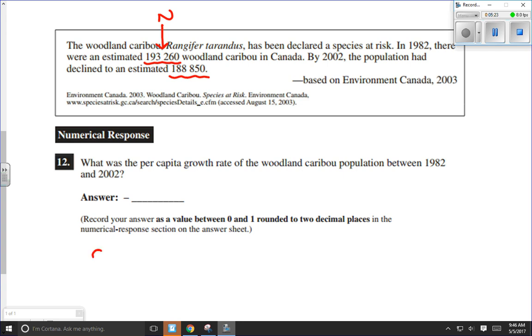Let's write our formula. CGR equals delta N over N. But we're going to need to find delta N. So delta N is our change in population size. It was originally 193,260, but it is now 188,850. So the population has obviously gone down. So let's figure this out. It's 188,850 minus what it was before, 193,260. So we're going to definitely get a negative number here.